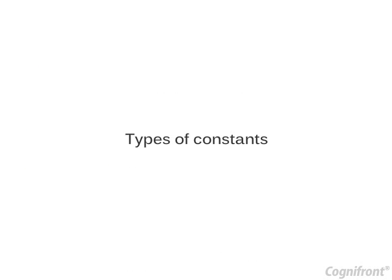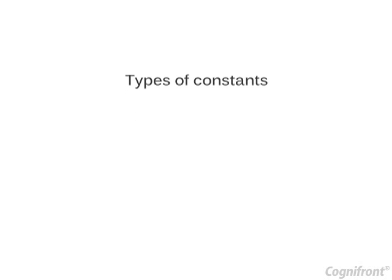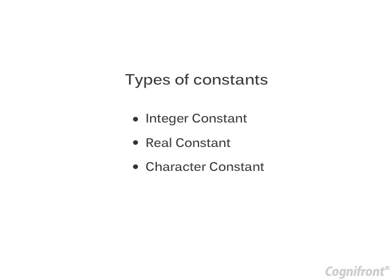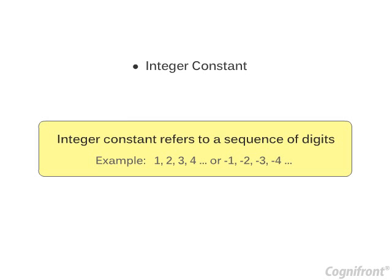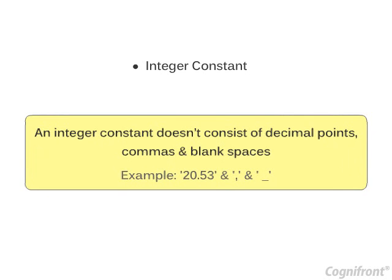Now, let's move on to different types of constants. These are integer constant, real constant and character constant. An integer constant refers to a sequence of digits. It might be positive or negative. An integer constant doesn't consist of decimal points, commas and blank spaces.